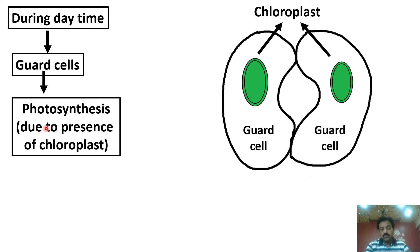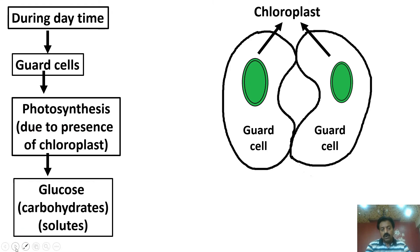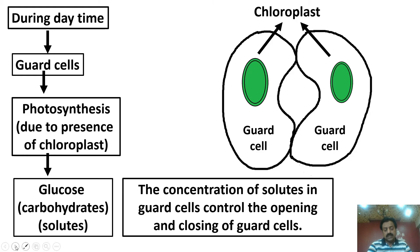Now we come to the mechanism of photo-active stomata in C4 plants during daytime. Guard cells have chloroplasts, so during the day they perform photosynthesis. Due to photosynthesis, glucose, carbohydrates, and sugars — which are solutes — start forming inside the guard cells. As these solutes accumulate, the concentration of solutes in guard cells increases. This concentration of solutes controls the opening and closing of stomata — making guard cells either turgid or flaccid.